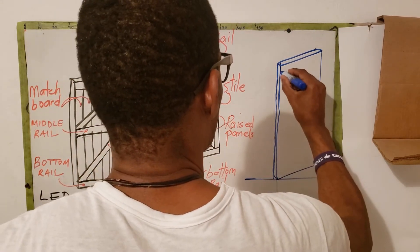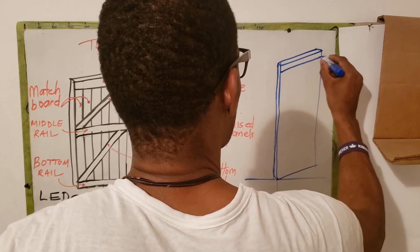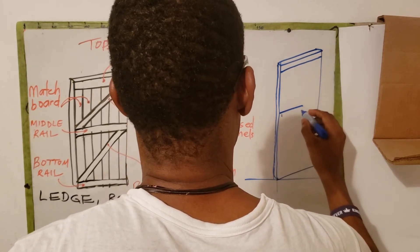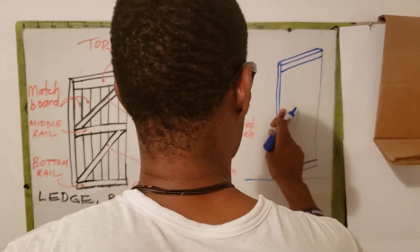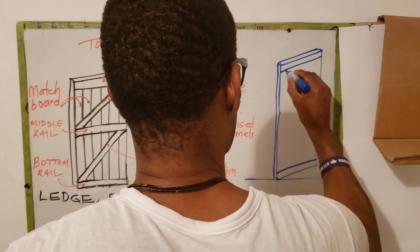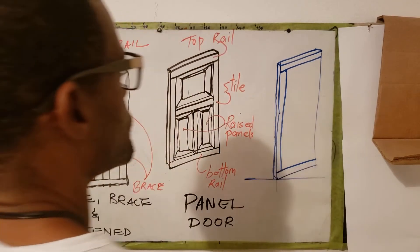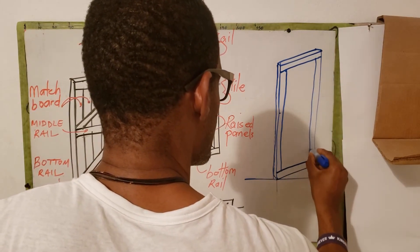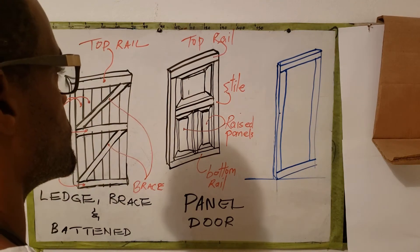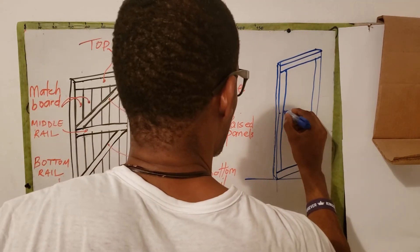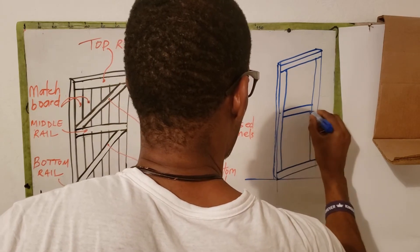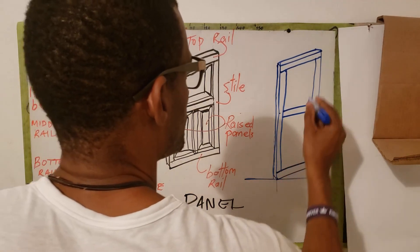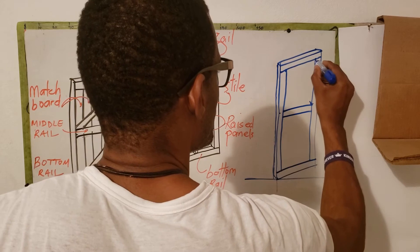Next I'm going to draw my top rail, then bottom rail first, then stile - one stile first, second stile - then the middle rail, then a line here to represent the thickness or the depth.